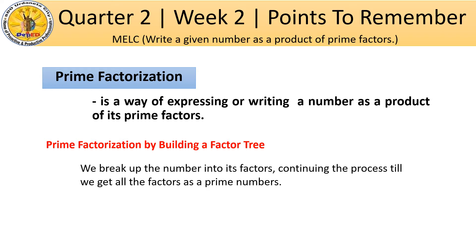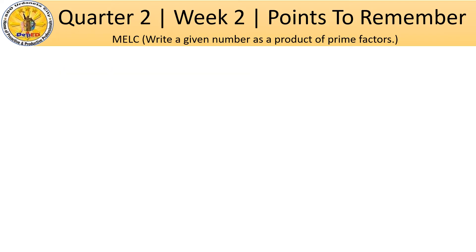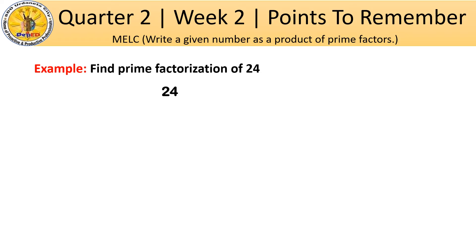Now, let's try prime factorization. For example, find the prime factorization of 24. 24 can be broken down into many pairs of factors. All you do is think of any two numbers that will multiply to give 24. I am using red numbers for prime and blue for composite numbers. Let us start with 3 times 8. If you remember the multiplication table, 3 times 8 equals 24. We are now starting to build a factor tree.